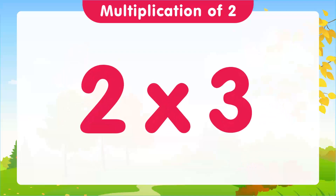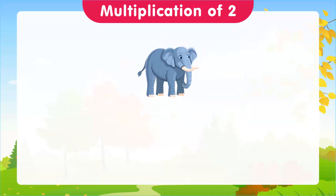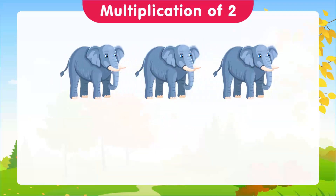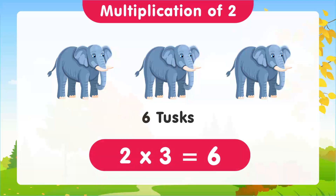For 2 times 3, we're going to use elephants. Imagine we have 3 elephants. How many tusks do they have between them? 6 tusks. And that's our third multiplication: 2 times 3 is equal to 6.